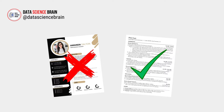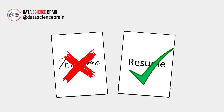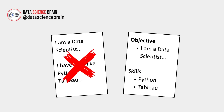Stick to a clean and simple format. Avoid using graphics, images, or complex layouts as ATS systems may struggle to interpret them. Opt for standard fonts like Arial or Calibri to ensure readability across different systems. Organize your resume with clear sections and headings, which not only enhances readability but also helps ATS systems categorize your information accurately.